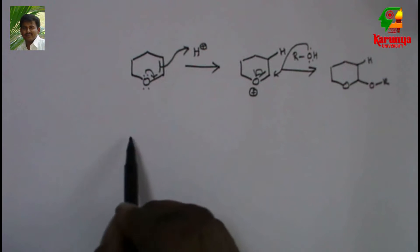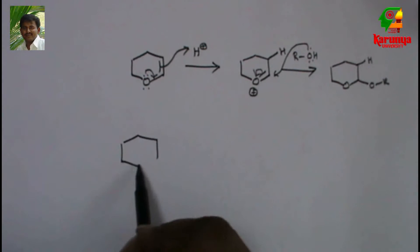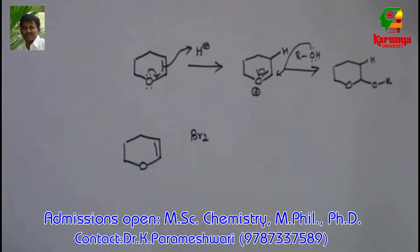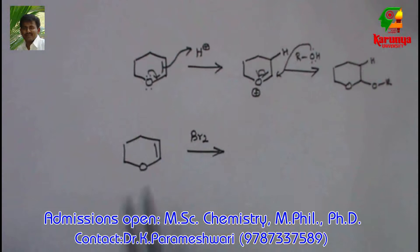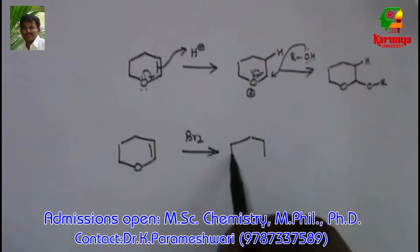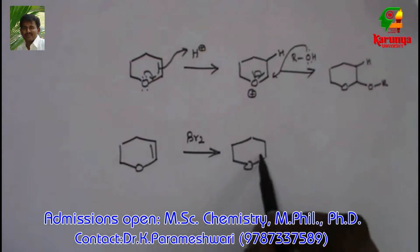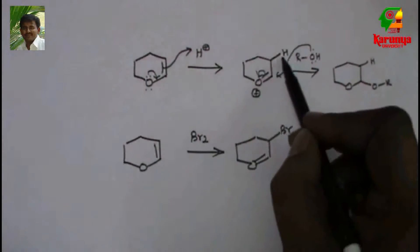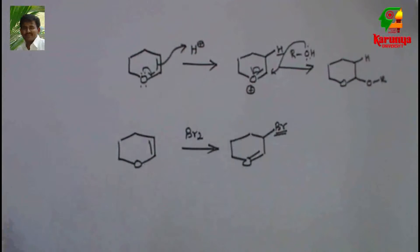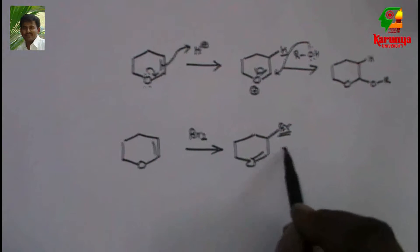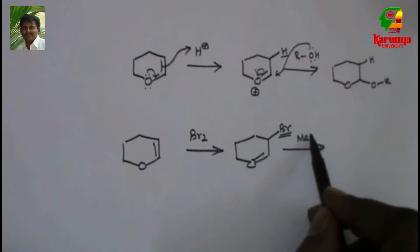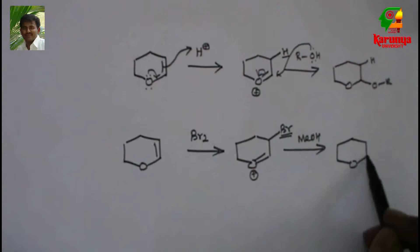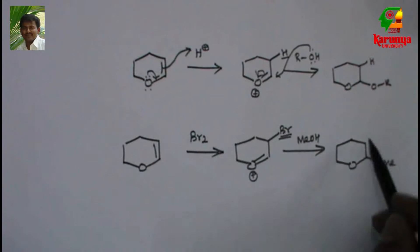The same thing is happening when you add bromine to this. Since bromine is electrophilic, we get an intermediate like this. Instead of hydrogen, now I have bromine that is opened by methanol to give a product like this.